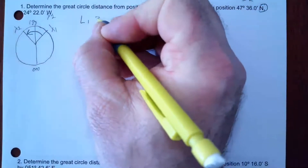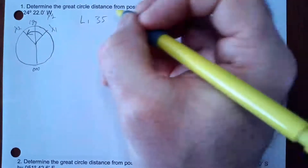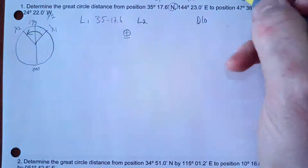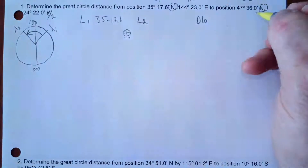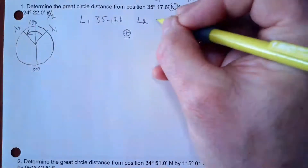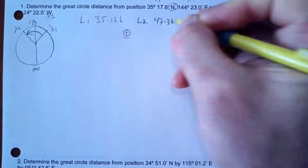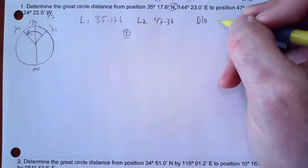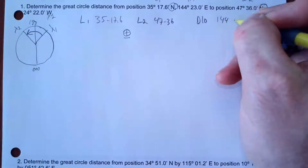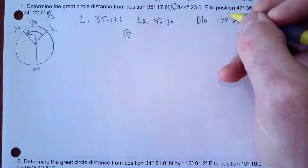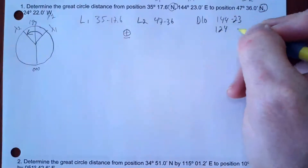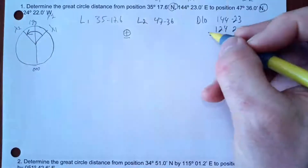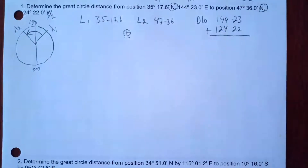L1 is 35° 17.6'. L2 is 47° 36'. My longitudes are 144° 23' and 124° 22'. From the picture I know I've got to add them and then subtract from 360.